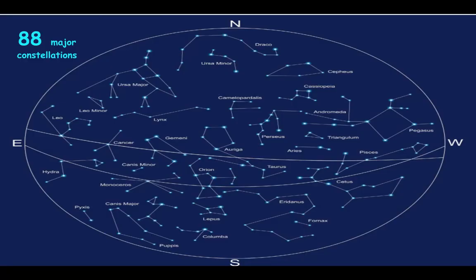There are 88 major constellations, and most people around the world use the same basic list.